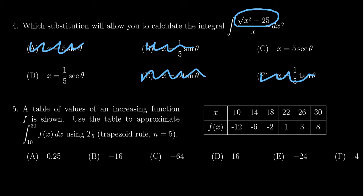So which one do we use? x = 5sec(θ) or x = (1/5)sec(θ)? The difference is that when looking at this difference of squares, you have to take the square root of the function squared and the square root of the constant squared.